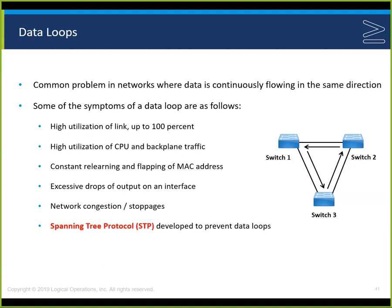Symptoms of data loops include high utilization of the link — 100% — high CPU utilization, constant relearning and flapping of the MAC address, excessive drops in the output, and network congestion where the network just stops. Spanning Tree Protocol was designed to prevent these loops.